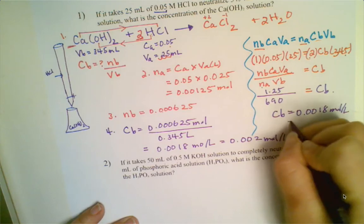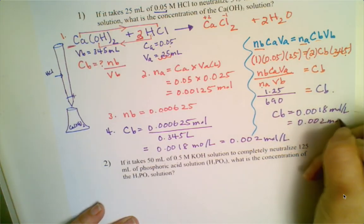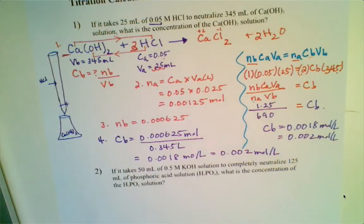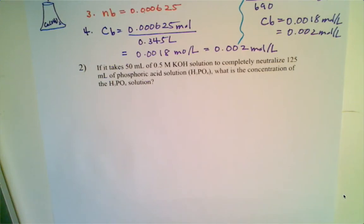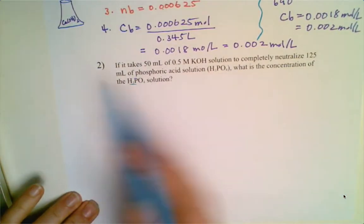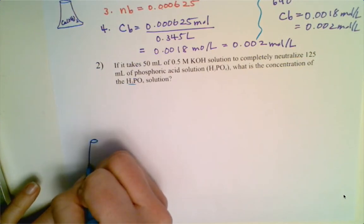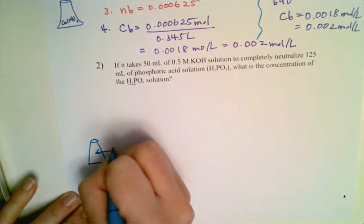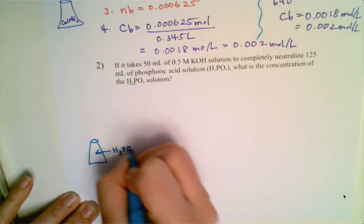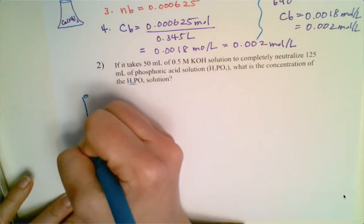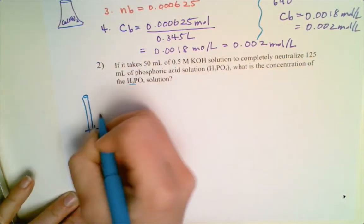This is the quick version for solving titration calculations — you can choose either method, whichever you're most comfortable with. The next scenario: 50 mL of 0.5 mol/L potassium hydroxide completely neutralizes 125 mL of phosphoric acid. Since we're finding the concentration of the acid, it goes in the flask; the KOH, whose concentration is known, is the standard that goes in the burette.